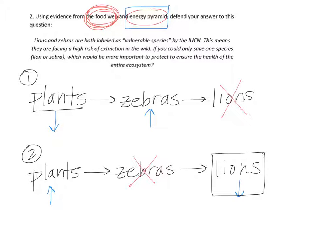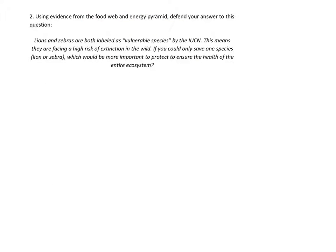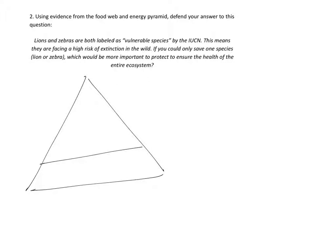The energy pyramid portion is a different type of evidence. In the energy pyramid, with plants eaten by zebras which are eaten by lions, we can talk about the amount of energy that is affected by losing either the lions or the zebras. If we lose the lions at the top of the energy pyramid, a smaller portion of energy is lost than if we lost the zebras, where a larger portion of energy would be lost.